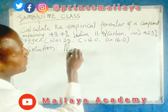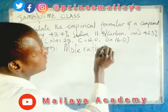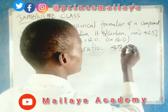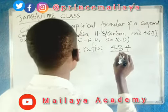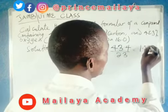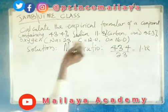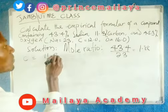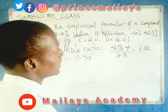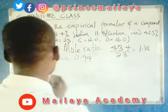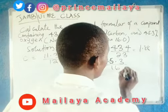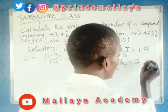Let us first calculate the mole ratio of the respective elements. For sodium, divide the percentage by its molar mass: 43.4 divided by 23, which gives 1.88. For carbon, 11.3 divided by 12, which gives 0.94. And for oxygen, 45.3 divided by 16, which gives 2.89.